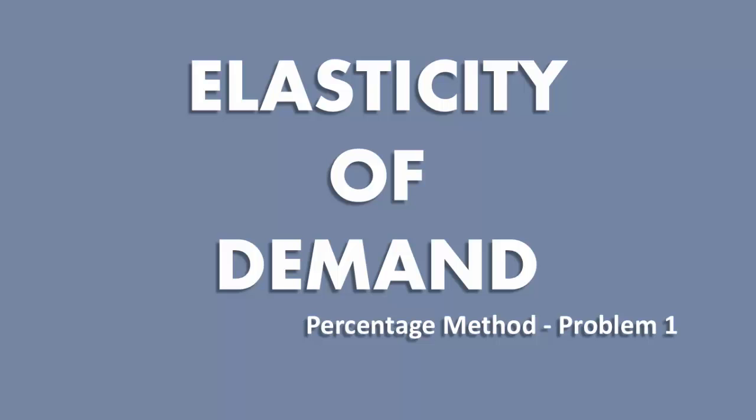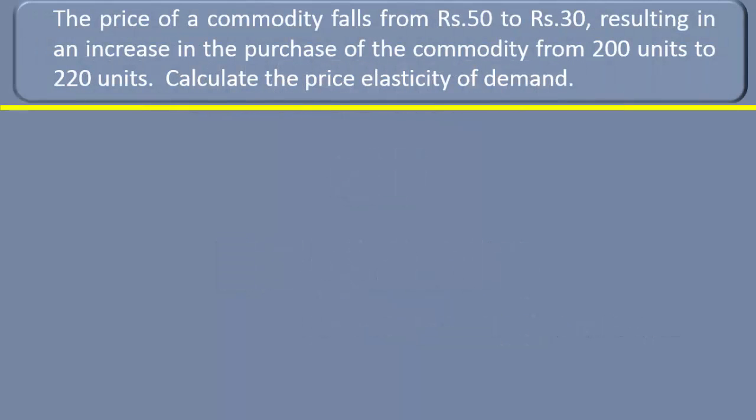We are going to solve a problem in elasticity of demand using the percentage method. The problem is this: the price of a commodity falls from 50 rupees to 30 rupees, resulting in an increase in the purchase of the commodity from 200 units to 220 units. Calculate the price elasticity of demand. This is the problem we are going to solve using the percentage method.